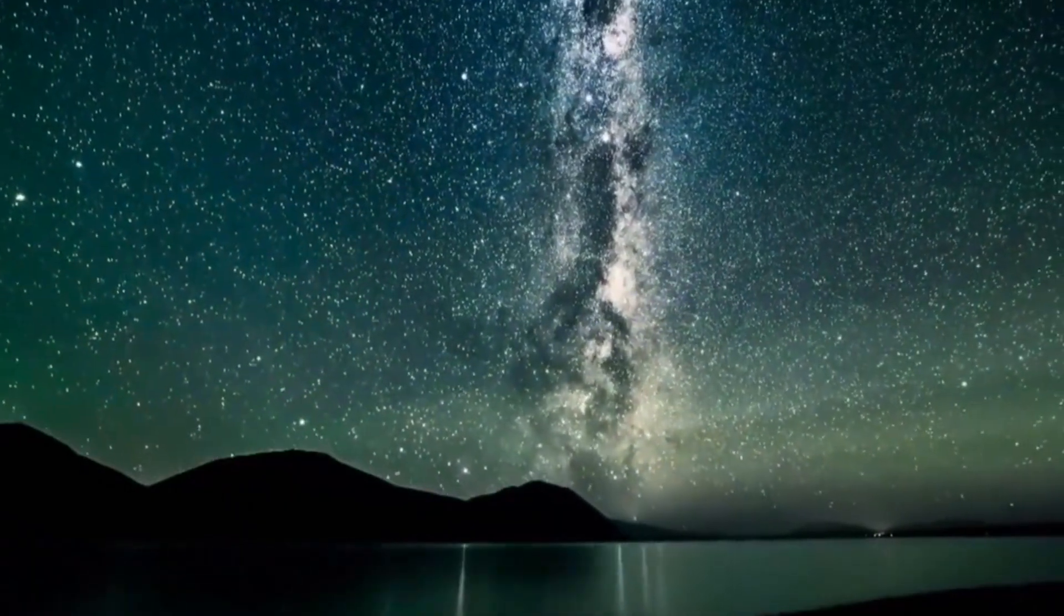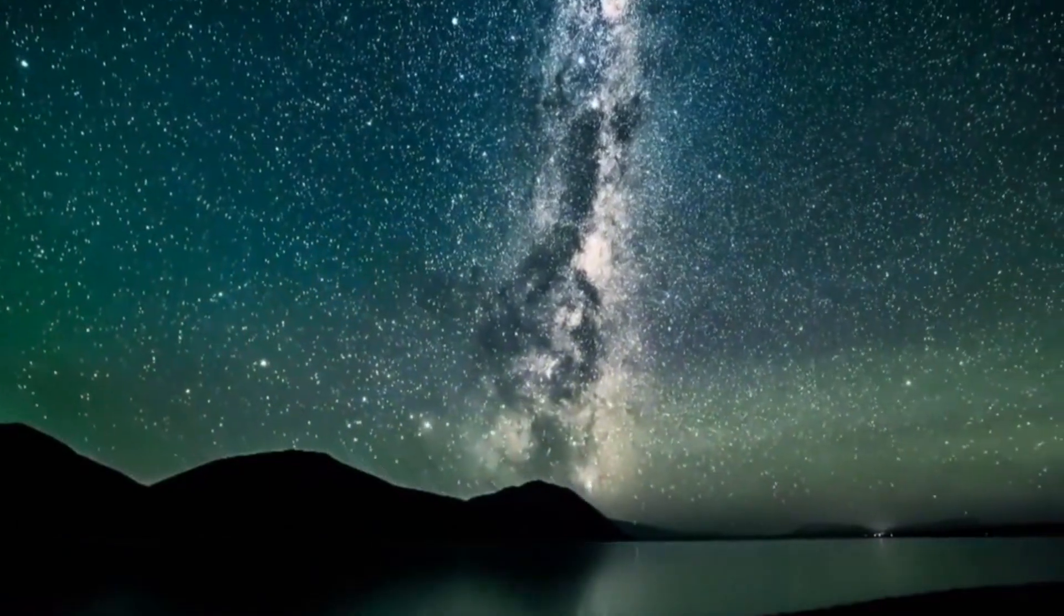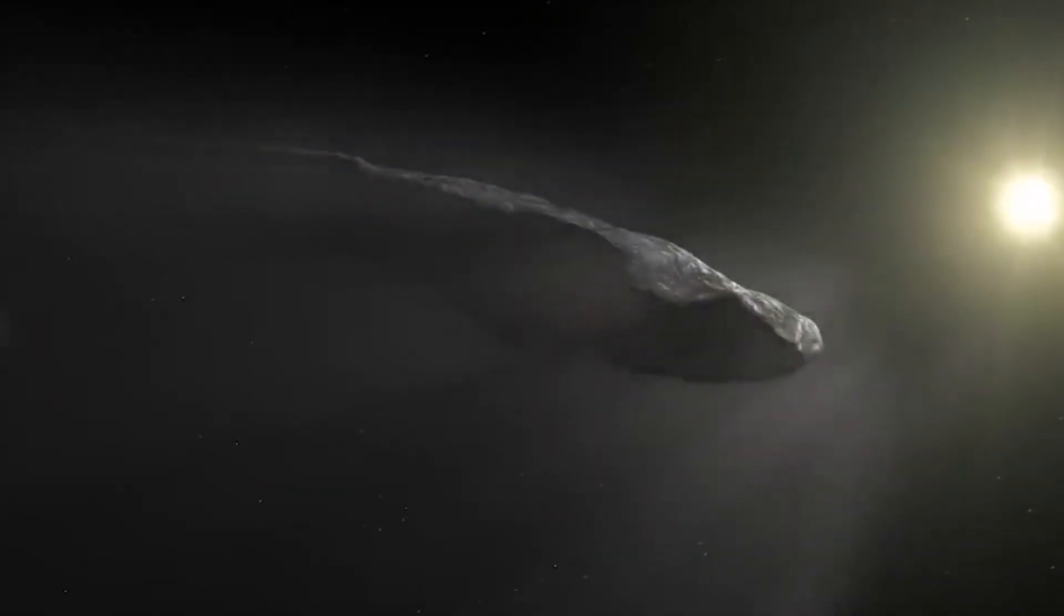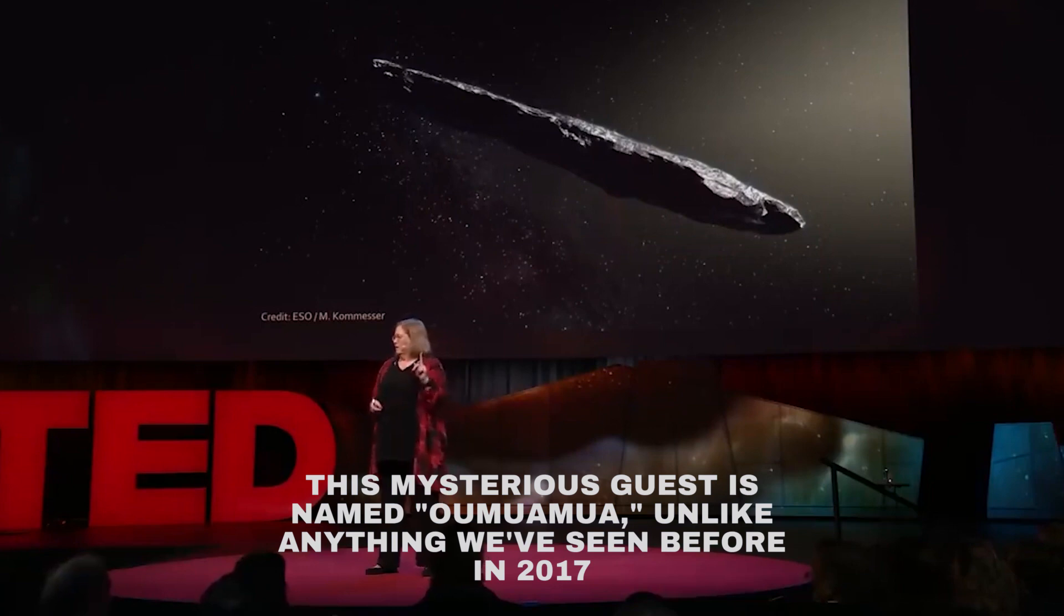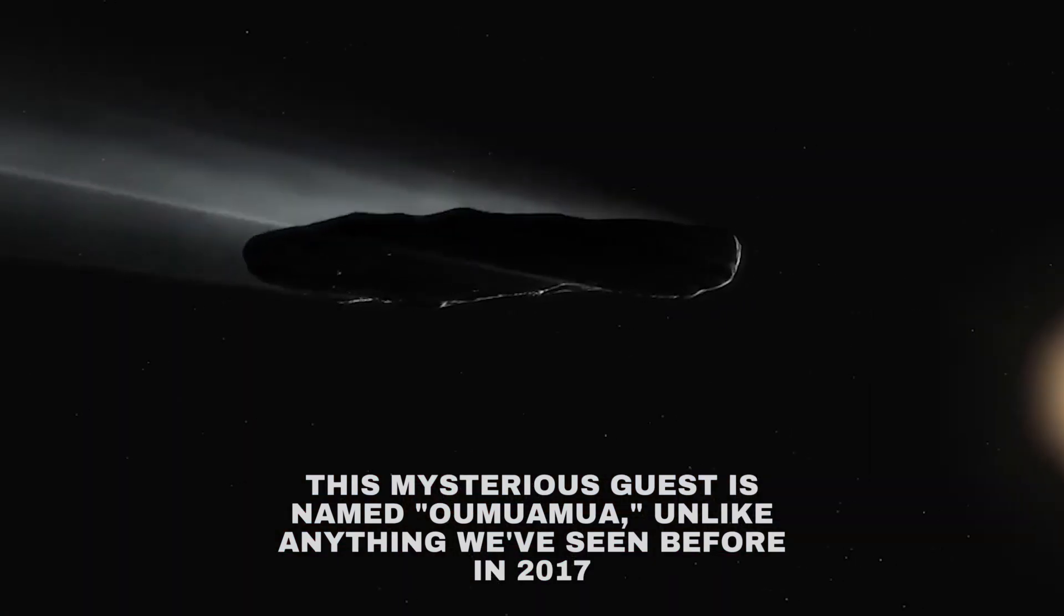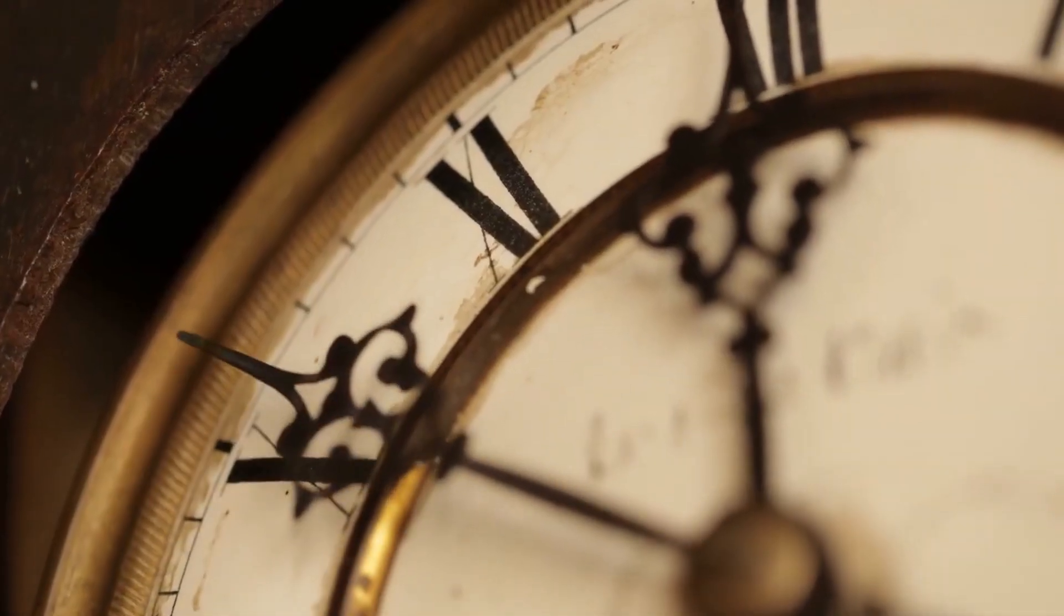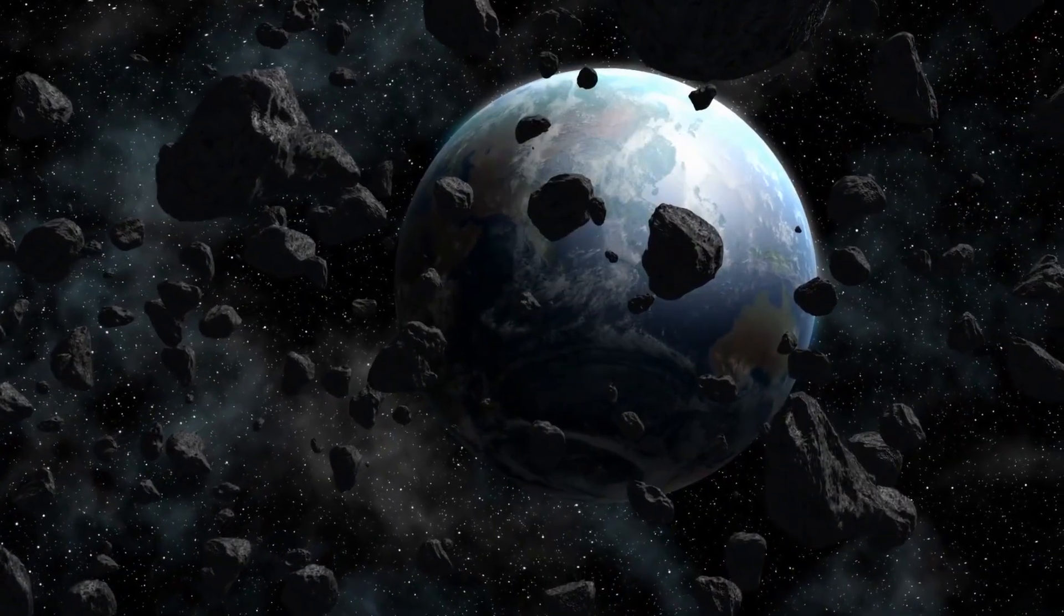Look at the night sky and see a vast universe filled with stars, planets and mysteries, but something extraordinary happened. Imagine a visitor from outer space. This mysterious guest is named Oumuamua. Unlike anything we've seen before, in 2017 scientists used powerful telescopes to spot Oumuamua. Initially they thought it was just another comet or asteroid.